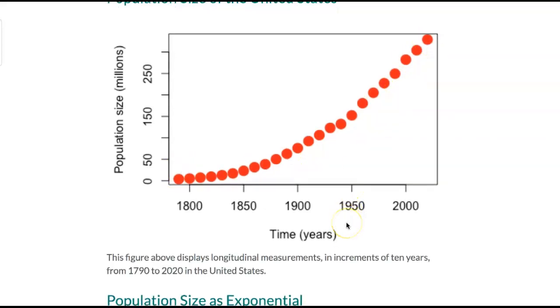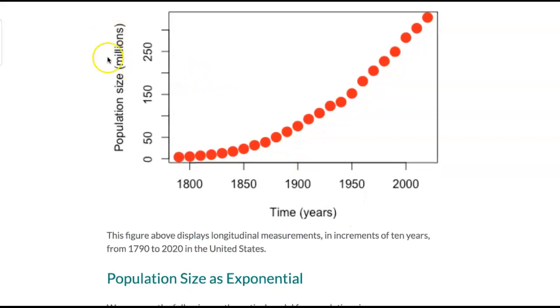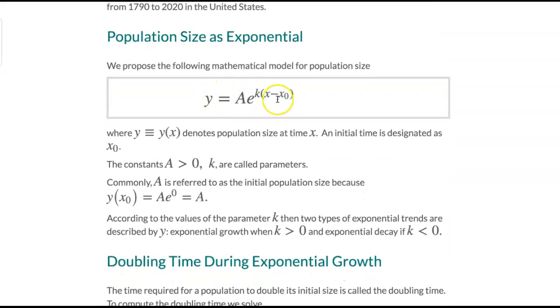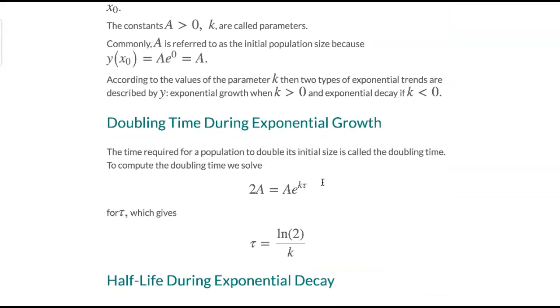Measurements were taken every decade with the census. Here is the formulation of the exponential model. There are some important concepts about doubling time and half-life. When we move on to compute estimates for the constants or parameters in the exponential model, we rely on the logarithmic transformation.